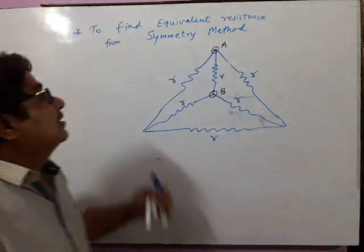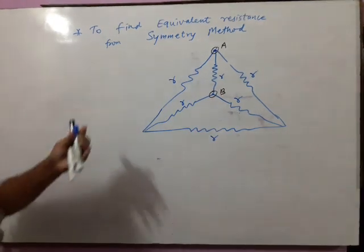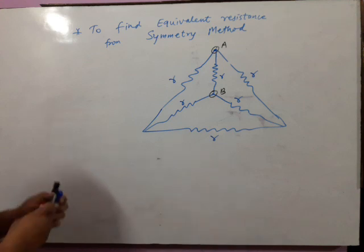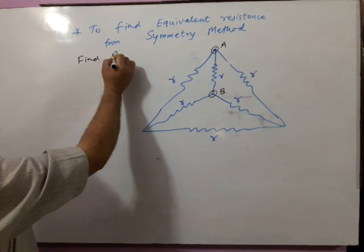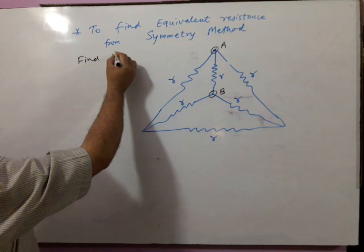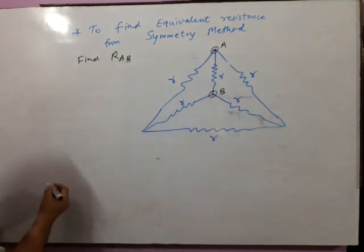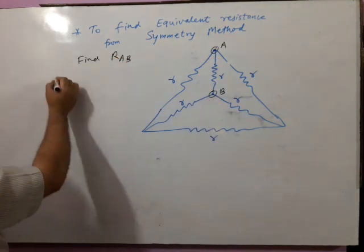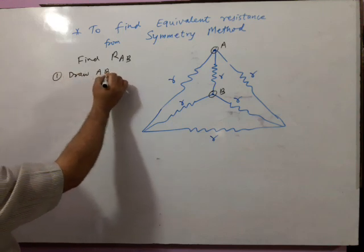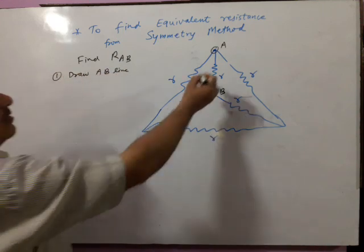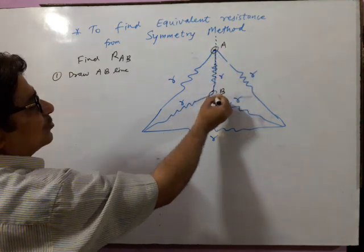Symmetry technique to find equivalent resistance. In this question, you want to find equivalent resistance between A and B. The symmetry technique says: draw the AB line and join A and B through a line.